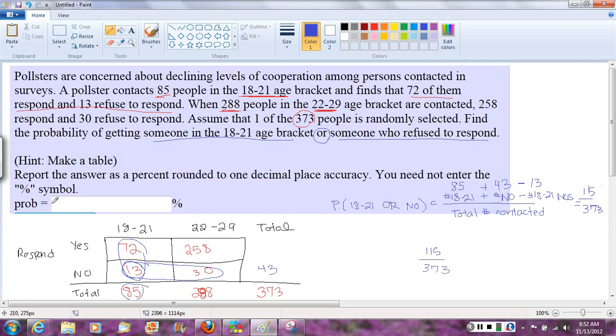They're asking for it as a probability converted to a percent. So we're going to do 115 divided by 373, which gives me 0.3083.